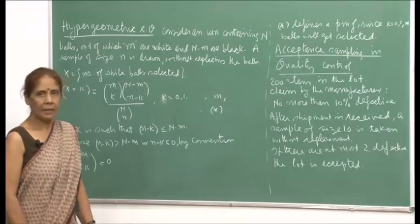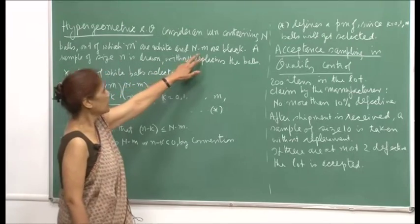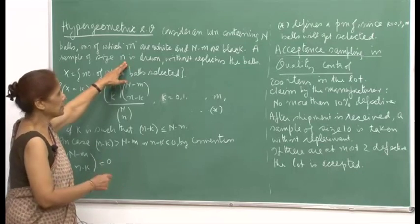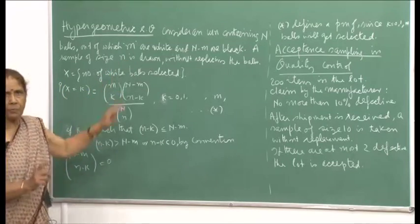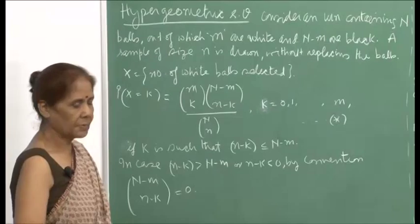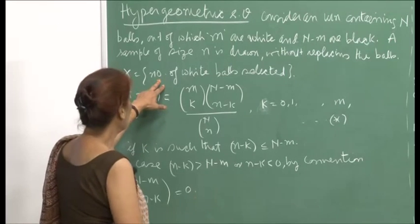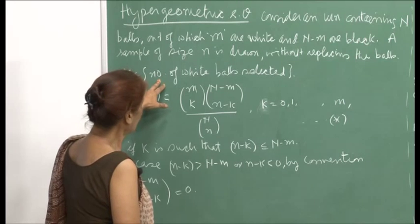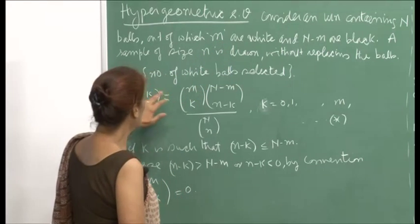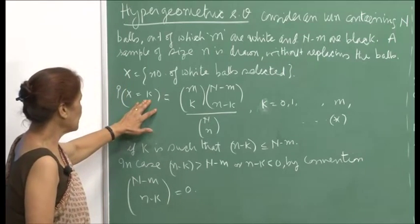Consider an urn containing N balls, out of which m are white and N minus m are black. A sample of size n is drawn without replacing the balls — that is important. The experiment is conducted without replacing the balls. If x is the random variable which counts the number of white balls selected, we look at the probability of the number of white balls being equal to k.